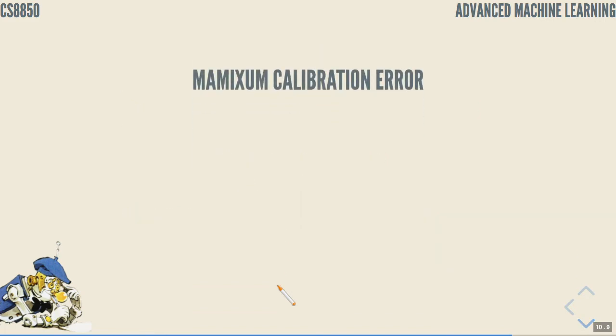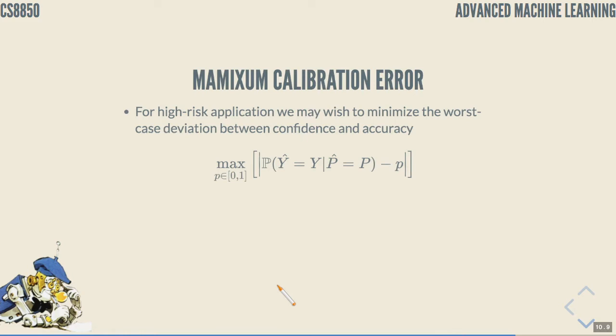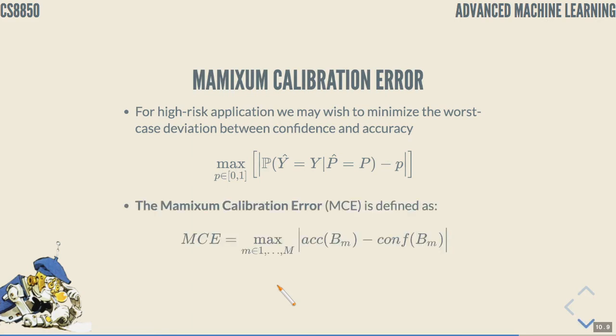For some high-risk applications we may wish to minimize the worst-case deviation between confidence and accuracy. Instead of expected calibration error we just look at the maximum and this is the maximum calibration error MCE, the absolute value of the difference between average confidence and expected accuracy.